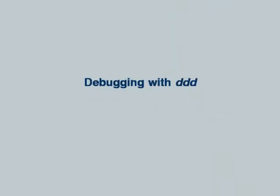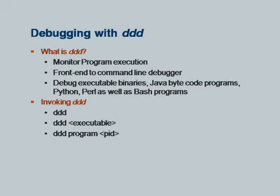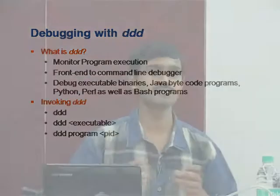Good afternoon everybody. Now we will see how to debug our programs with DDD. What is DDD? DDD is basically for monitoring your program execution. Many times after writing a C program you have to debug it. Maybe it will be for a C program, C++, Java — DDD provides a common interface for all these debuggers.